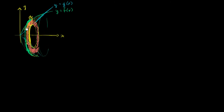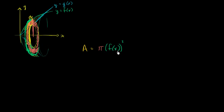A washer, you can imagine, is kind of a gutted-out coin. So how do we find the volume? Well, if we know the area of the face of this washer, we can just multiply that times the depth. The area of the face of the washer — it could be the area if it wasn't gutted out. That would be pi times the outside radius squared. What's the outside radius? The radius that goes to the outside of the washer — well, that's f of x. So it's going to be pi times f of x squared. That expression gives us the area of the entire face if it was just a coin.